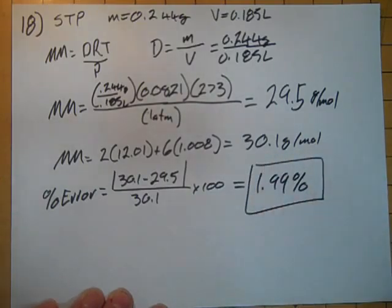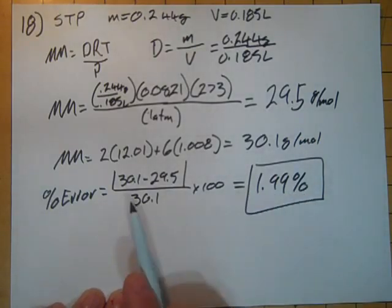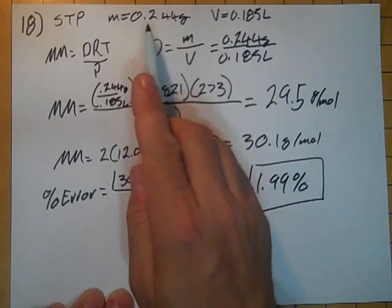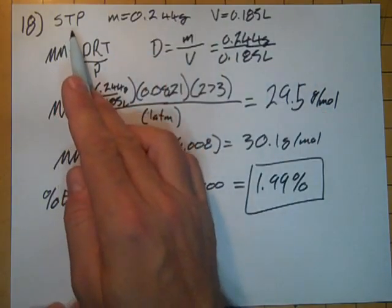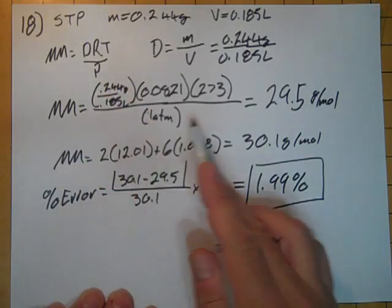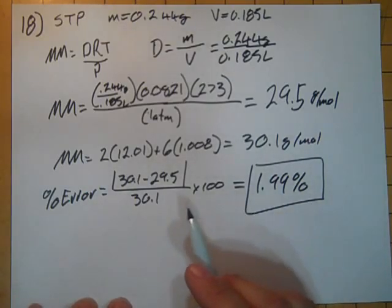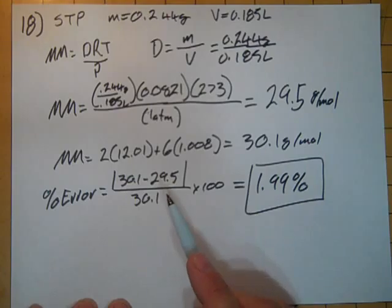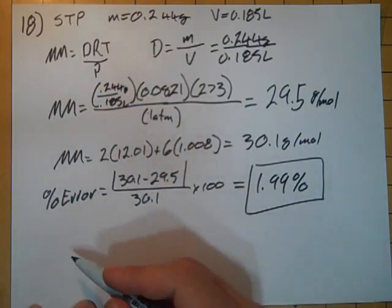So that's how much we missed it by. So what's the source of this error? Assuming that the data are correct, that this was the mass, this was the volume, it was done at STP, so I know the temperature and pressure are right. Then the source of this error, if there's not a mistake in a measurement, is due to the fact that this is a version of the ideal gas law.